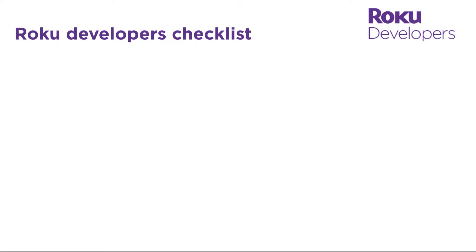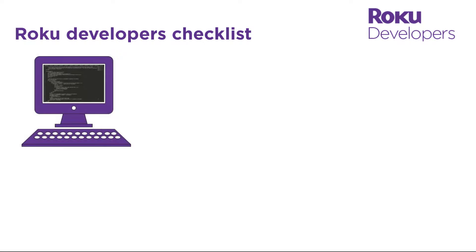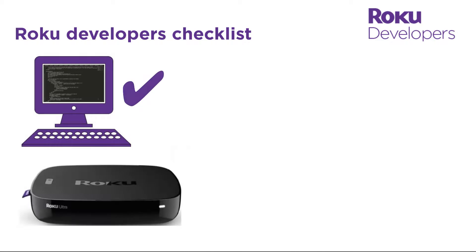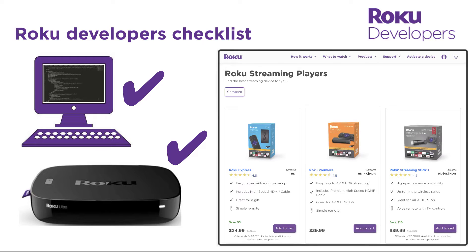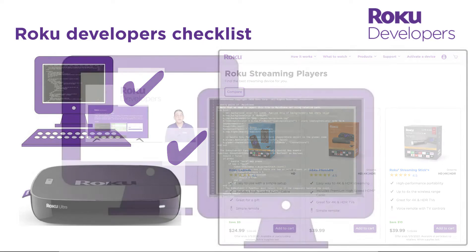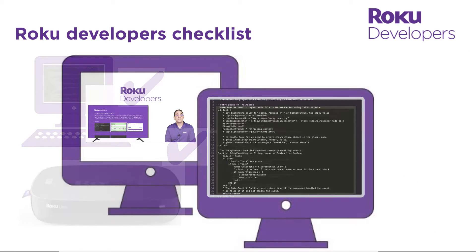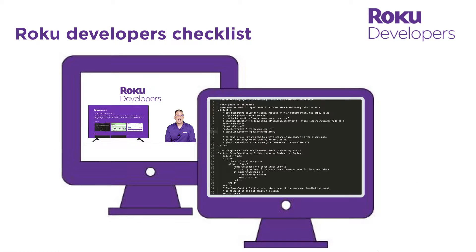Before getting started, let's make sure you're ready. You need to have a few basic items such as a computer and a Roku device. You can get a Roku device from Roku.com, your local electronics retailer, or a second-hand marketplace. Having dual monitors will enable you to watch these courses on one screen while programming and testing on another.